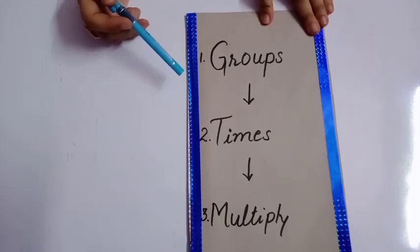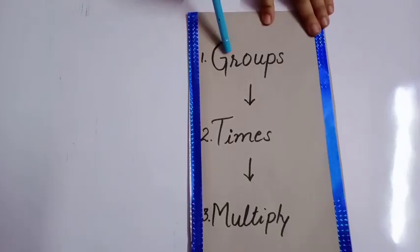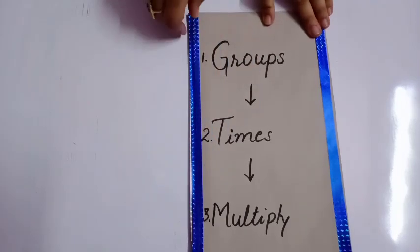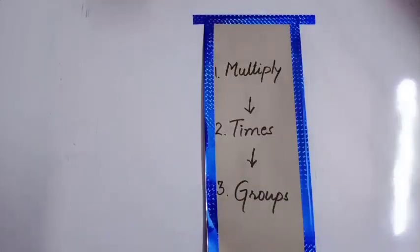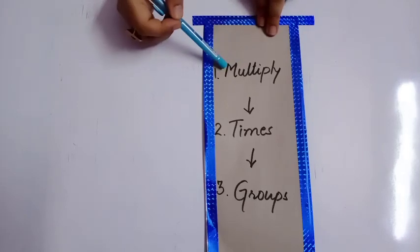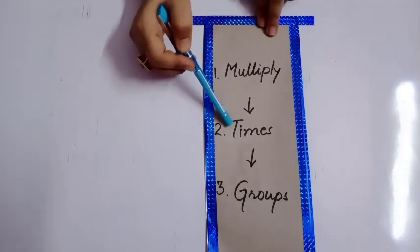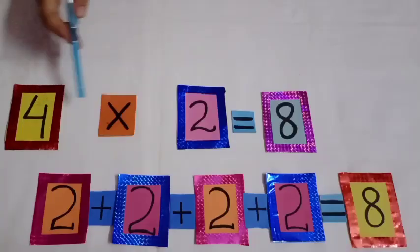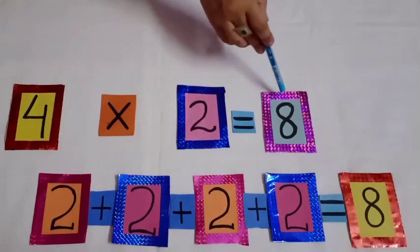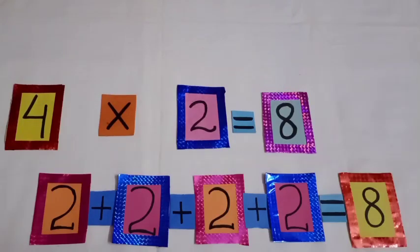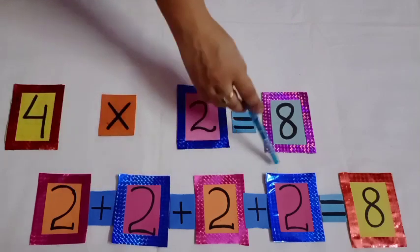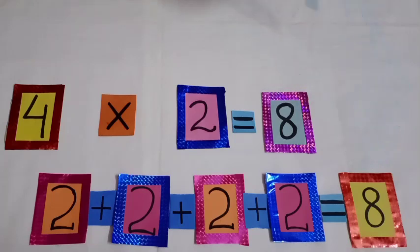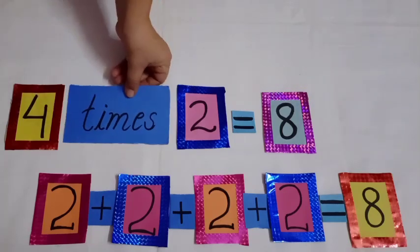Dear students, we have learnt how to make groups and then change them into times and then into multiplying. Now we will learn how to change multiplication back into times and then into groups. 2 multiplied by 4 is equal to 8. It means we have to add 2, four times, and it will be 8. 4 times 2.